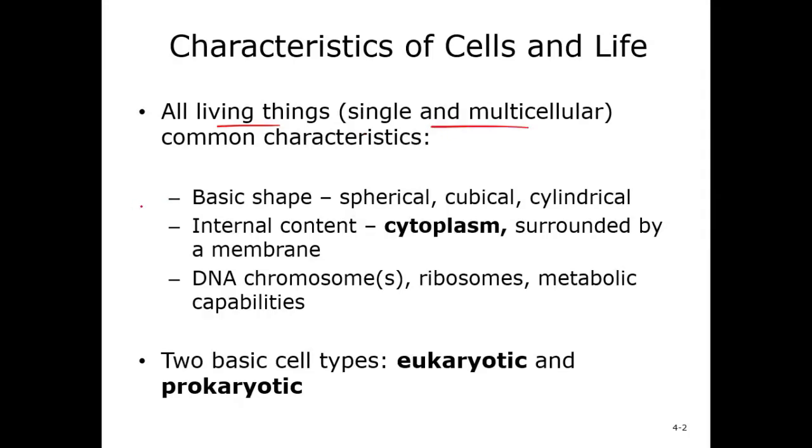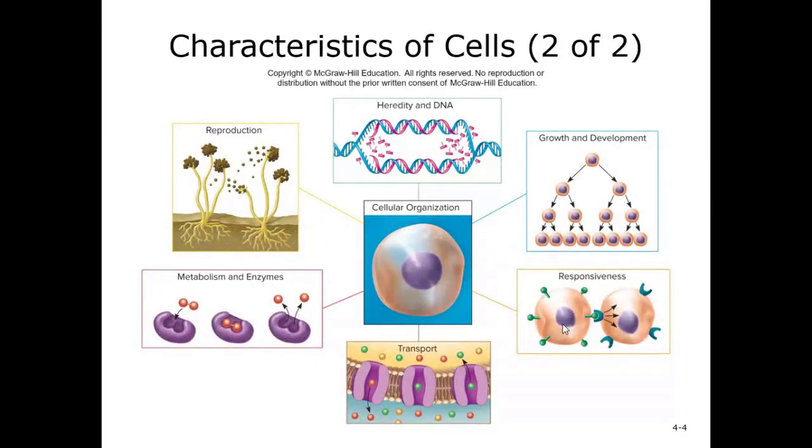All cells have to have a few things. All cells have some sort of shape. All cells have to have the cytoplasm, which is that jelly-like stuff in the cell. All cells have some sort of membrane which we call the cell membrane or the plasma membrane that surrounds the cytoplasm. All cells have to have DNA, the genetic material. All cells have ribosomes where proteins are made. All cells need to be able to reproduce, grow, respond, transport, and have some sort of metabolism.